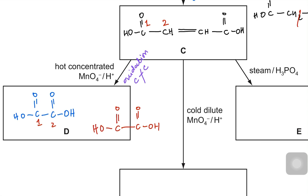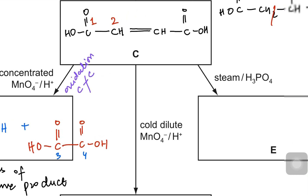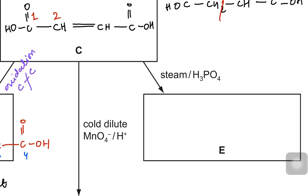You will receive a carboxylic acid on the right side which was already there, and another carboxylic acid on the left — so carbon three and carbon four. These two molecules are separated: two moles of the same product, because you can see they are both the same product. This is your dicarboxylic acid — ethanedioic acid.